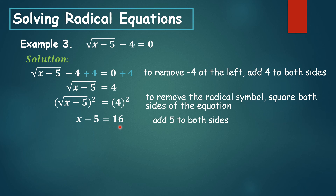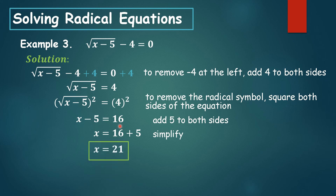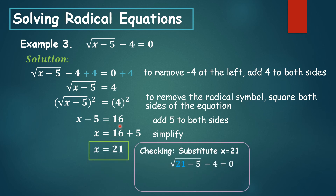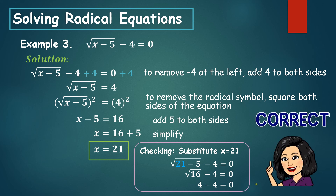To isolate x, add 5 to both sides of the equation. 16 plus 5 is 21. To check, substitute: the square root of 21 minus 5 is 4, and 4 minus 4 is equal to 0. It's correct.